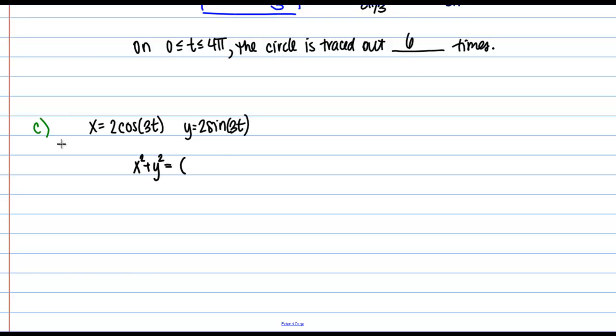Okay, so I'm going to take this expression, 2 cosine of 3T squared, plus 2 sine of 3T squared. And let's work out what that is. So if I square 2 cosine of 3T, I'm going to get 4 cosine squared of 3T, and then plus 4 sine squared of 3T.